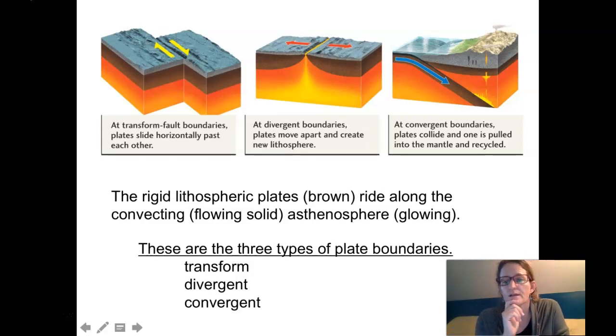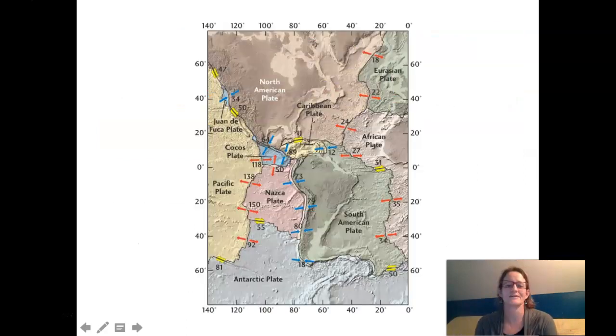This is also where we pop up our biggest mountain chains like the Himalayas and the Appalachian Mountains. So we're going to go through each of the plate boundaries individually. Here is a map.